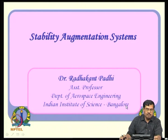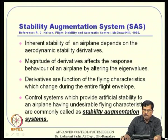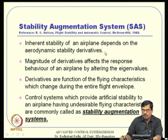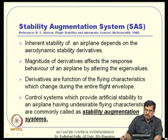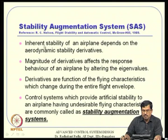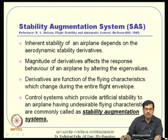Let us talk about stability augmentation systems. Inherent stability of an airplane depends on the aerodynamic stability derivatives — these depend on wing shape, body shape, angle of attack, and incident angle among other design variables. Sometimes an unstable aircraft is purposefully designed: for commercial aircraft we need stability, but for fighter airplanes an unstable aircraft is desired for drag minimization and higher maneuverability. This reduces induced drag and makes response time smaller, which is crucial in combat.